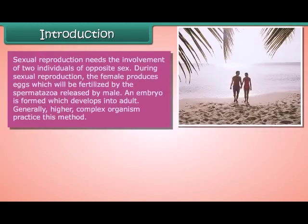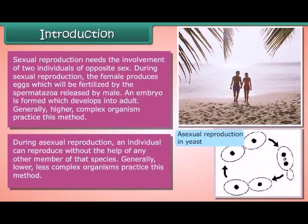Sexual reproduction needs the involvement of two individuals of opposite sex. The female produces eggs which will be fertilized by the spermatozoa released by the male. An embryo is formed which develops into an adult. Generally, higher complex organisms practice this method. During asexual reproduction, an individual can reproduce without the help of any other member of that species. Generally, lower, less complex organisms practice this method.